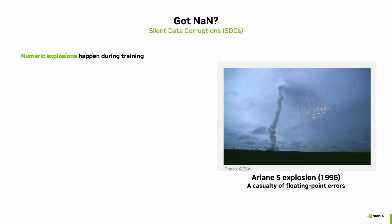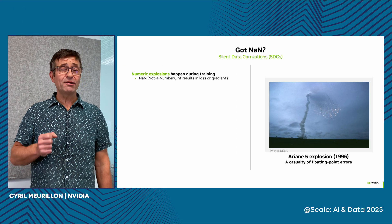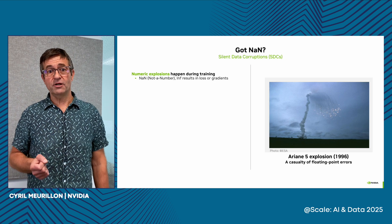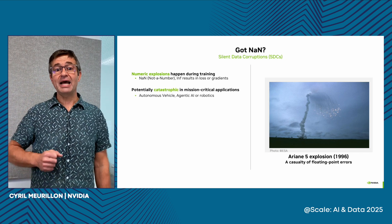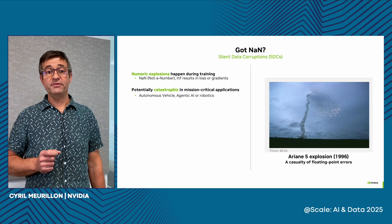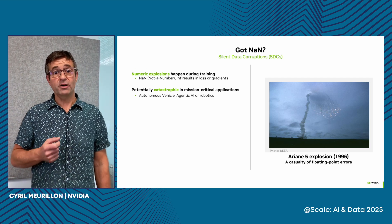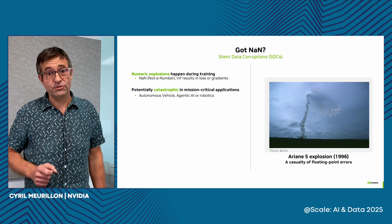Have you ever experienced a numeric explosion when training a model? The infamous NaN, or not-a-number, error? Many AI engineers have. There are rather annoying errors causing the entire training to stop. Now, imagine if this happened in the context of an autonomous vehicle or mission-critical AI agent or robot. You may literally hit a wall, and that would be catastrophic.